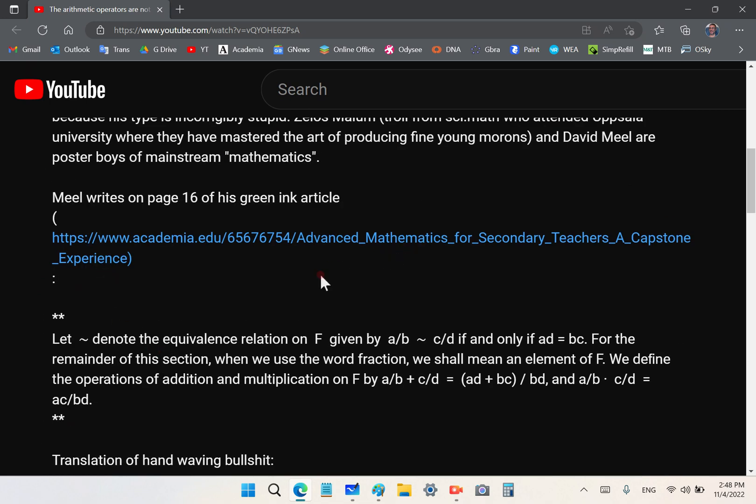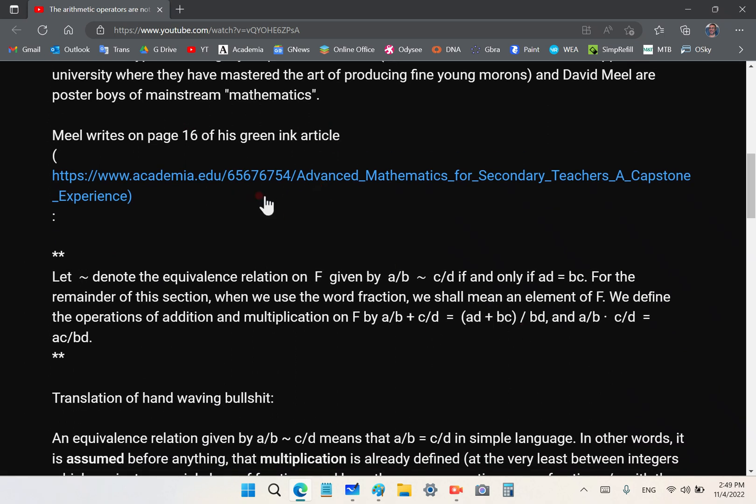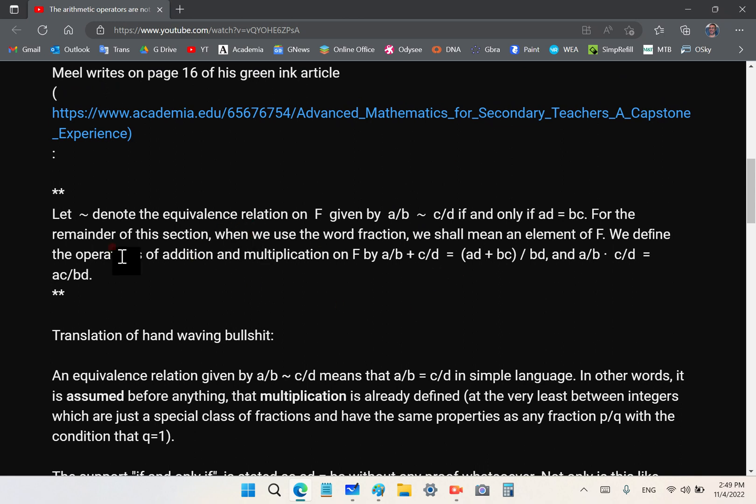This is the reason I get angry because when I correct mainstream idiotic mathematics lecturers and teachers, they don't accept the correction. They don't admit they're wrong. And the first thing of an intelligent person is that when they're shown overwhelming evidence that they're wrong, they should admit they're wrong. That makes me angry when they don't.